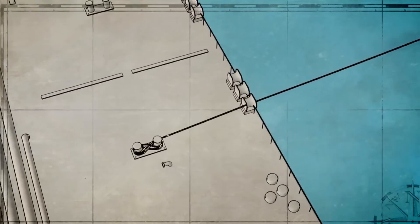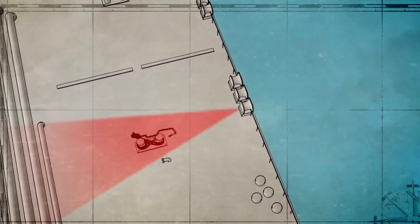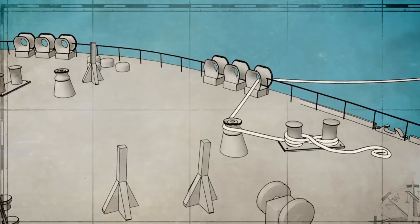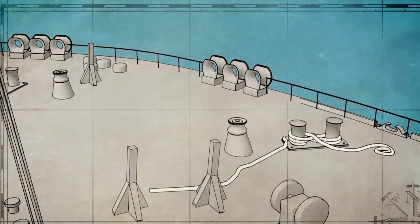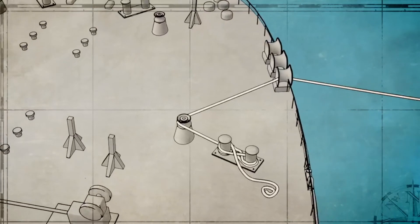Always avoid the snapback zone, the likely path of a parted line. Snapped lines which are wrapped around a lead under tension can be even more deadly, since they can swing around the lead in a larger arc, increasing the snapback zone.